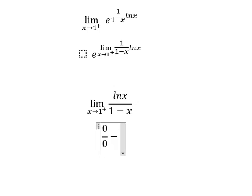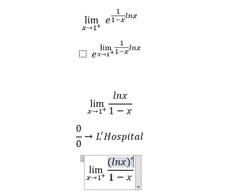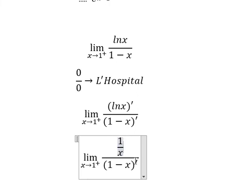So we can use L'Hospital's rule. That means we need to take the first derivative of the numerator and denominator. The numerator gives us 1 over x, and the denominator gives us negative 1.